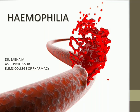Today we are going to deal with a topic called hemophilia. Hemophilia is called the royal disease because in 1837, Queen Victoria of England was found to be a carrier of the gene responsible for hemophilia, and she passed her gene to several generations in the royal family.